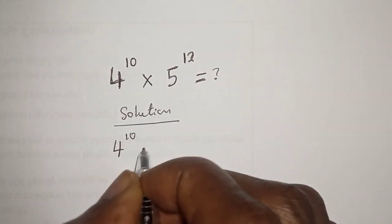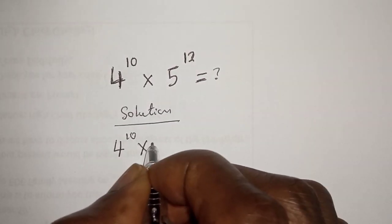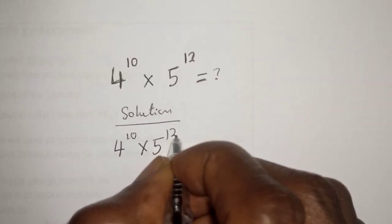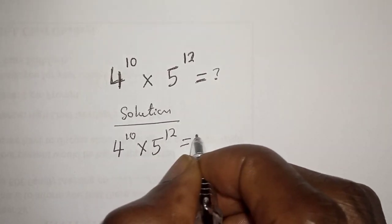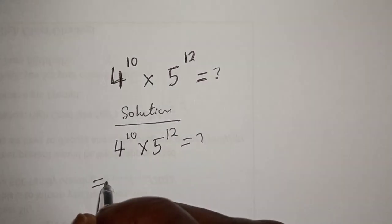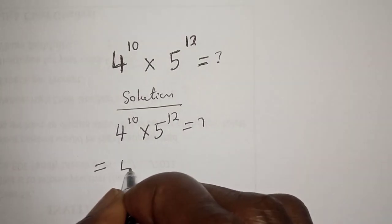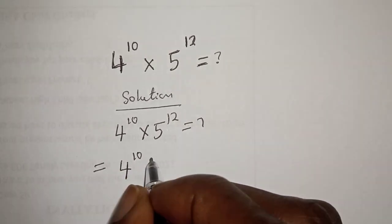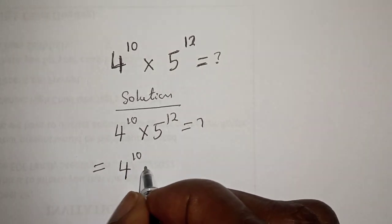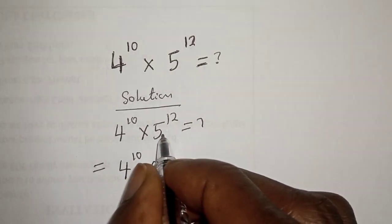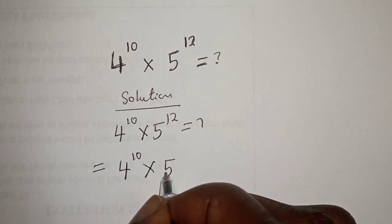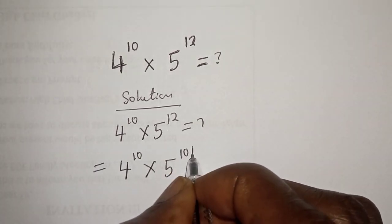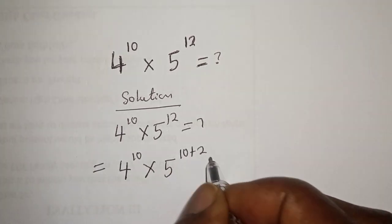4 raised to power 10 multiplied by 5 raised to power 12 is unknown. So, this is equal to 4 raised to power 10 multiplied by 5 raised to power 12, which can be written as 5 raised to power 10 plus 2.